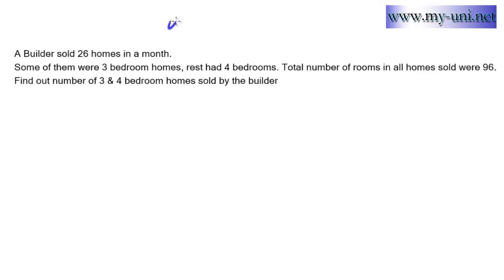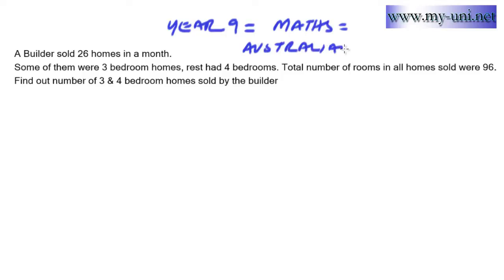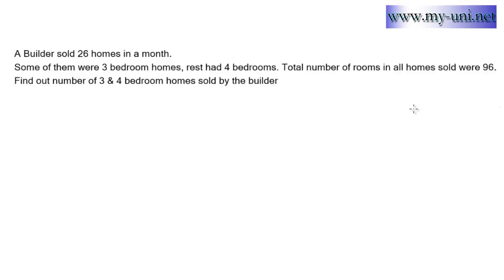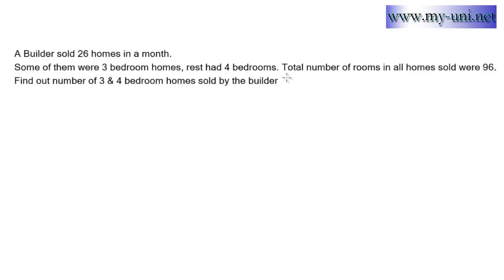This is a Year 9 Mathematics problem under Australian standards. A builder sold 26 homes in a month — some were three-bedroom homes and the rest had four bedrooms. The total number of rooms in all homes was 96. We need to find out the number of three and four bedroom homes sold by the builder.